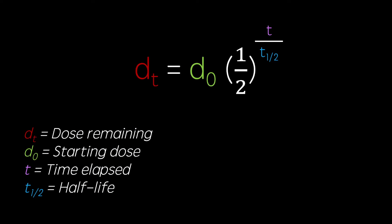The equation for calculating the remaining concentration of a drug in a system is the starting dose multiplied by a half to the power of the time elapsed over the drug's half-life.